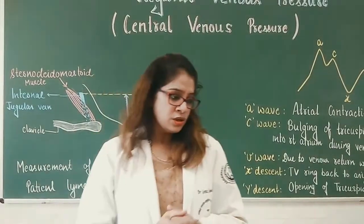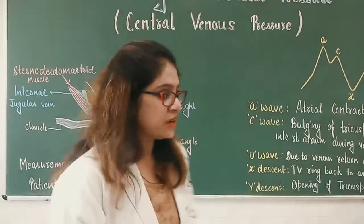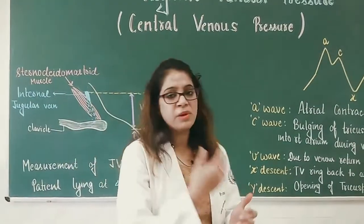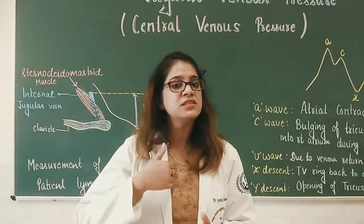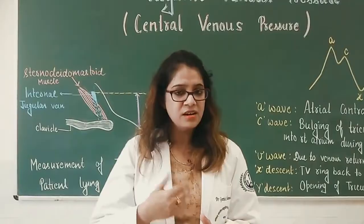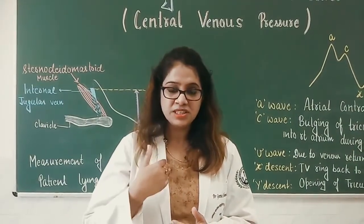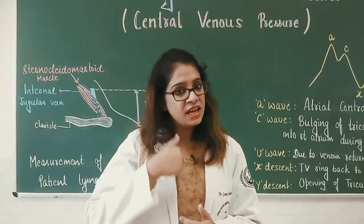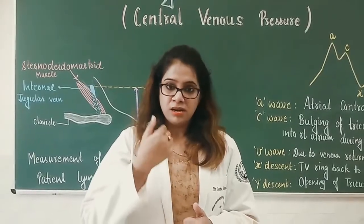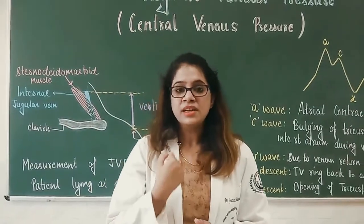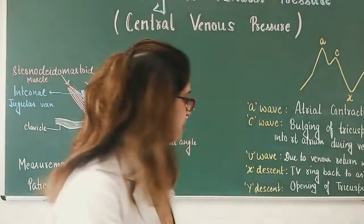The internal jugular vein passes behind the mastoid process and enters into the neck. It passes behind the sternocleidomastoid muscle and then enters into the thorax in between the clavicular and external head of the sternocleidomastoid muscle.